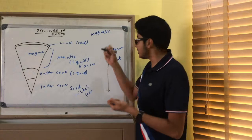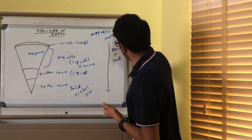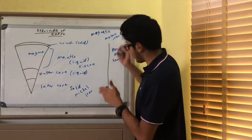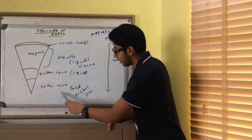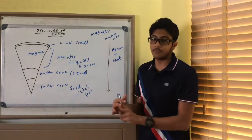And also, meteors, we know that meteors contain iron. And so, we use this information, and we believe that our inner core is solid and nickel and iron.